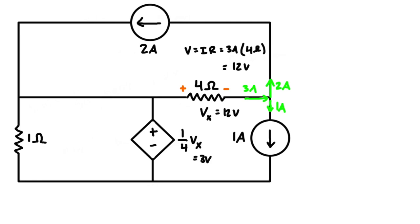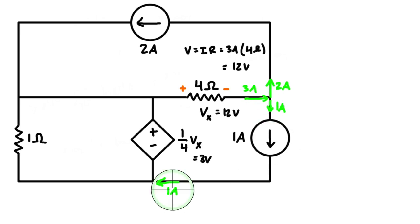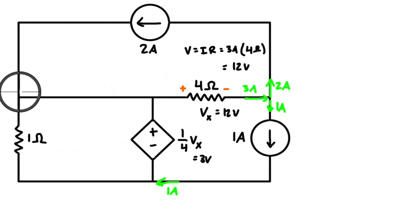We can also label the currents at the other junctions. There is still one amp flowing through this branch, two amps at the end of this branch, and three amps going through the four-ohm resistor as we established.